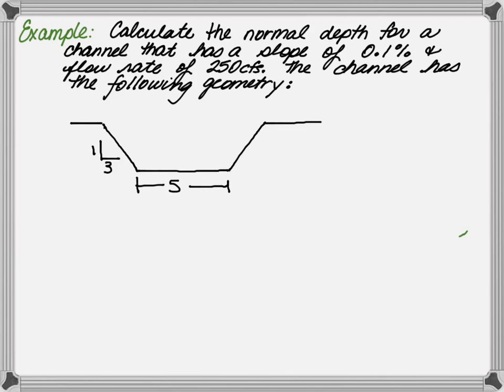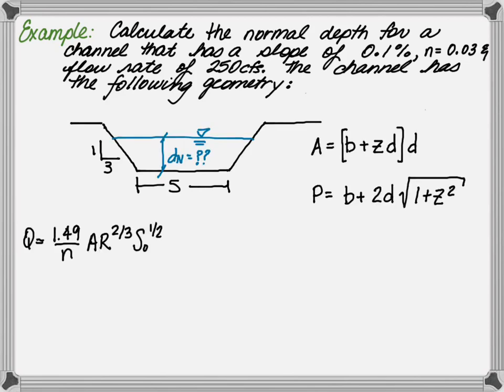This should bring us back to remembering the Manning's equation. We can plug in the area and perimeter into this equation. For a trapezoidal channel, the cross-sectional area A is equal to the base width plus the side slopes times the depth and the entire quantity times the depth. The perimeter is equal to the base width plus 2 times the depth times the square root of 1 plus the side slopes squared.